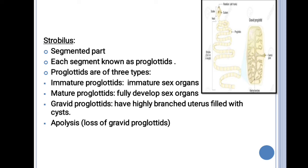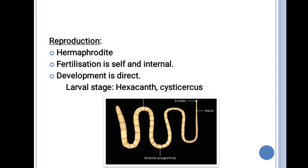Reproduction in the tapeworm is hermaphroditic, meaning they have both male and female sex organs. Fertilization is self and internal, and development is direct, meaning they pass through larval forms. The larval stages are the hexacanth and the oncosphere.